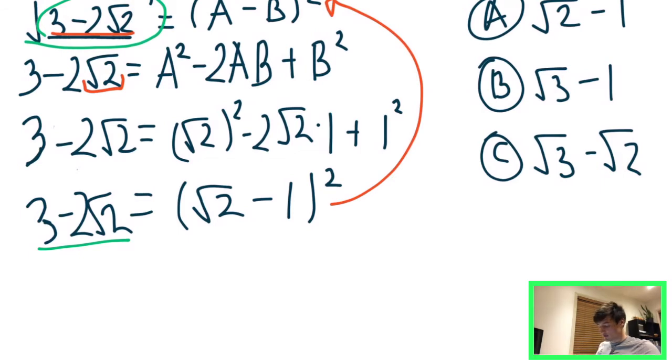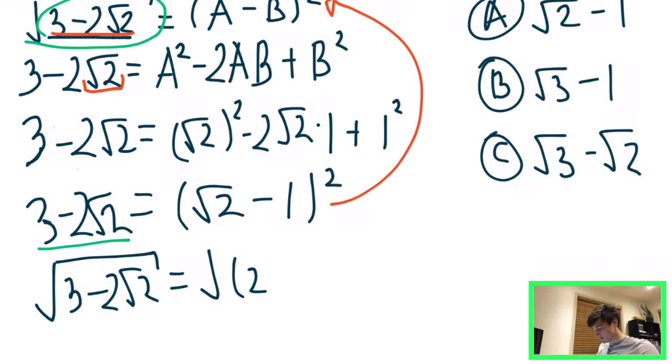Now we're getting close. So in order for this number here to match up with this initial problem, we're going to square root it. So we have square root of 3 minus 2 root 2. And we're going to do the same to the right-hand side. So we're going to have square root of root 2 minus 1 all squared.